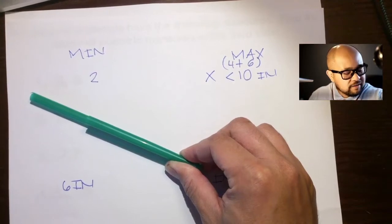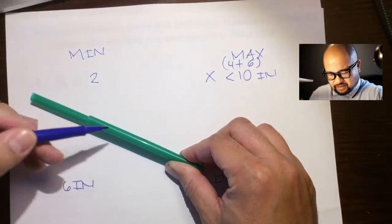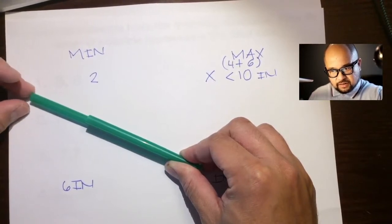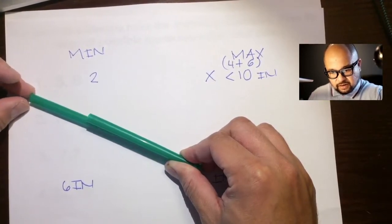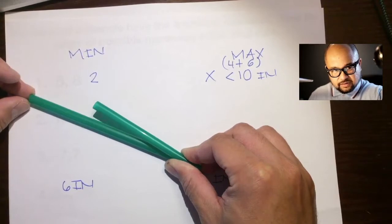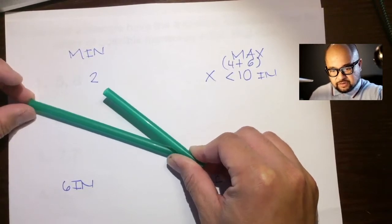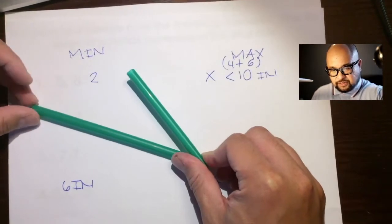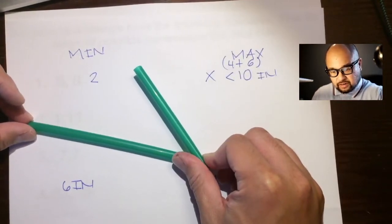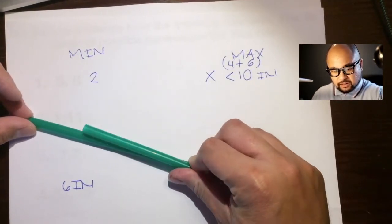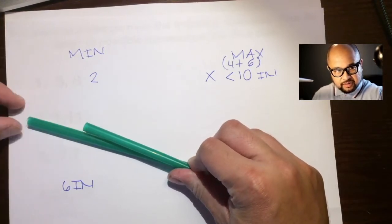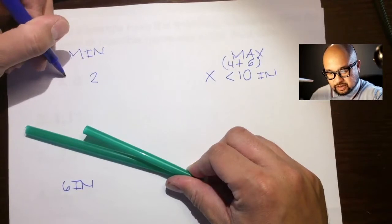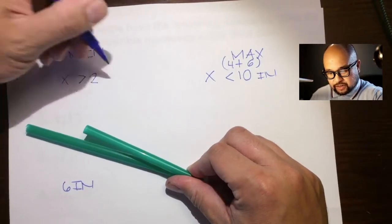However — look at this. Is this a triangle? No. What would we have to do to make this into a triangle? We'd have to make this angle slightly larger. And as we make it larger, what's happening to that third side? It's getting longer — longer than 2. So the minimum has to be greater than 2 inches.